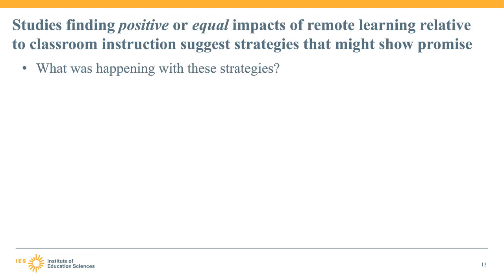Let's pivot from studies with negative impacts and look at promising strategies from studies with positive or equal findings. Across the studies we examined, many involved web-based applications; one involved using phones; some looked at technological devices without internet access. None examined the model where schools send home packets of work. Many of these studies occurred within the walls of the classroom — we were generous in our definition of remote learning and included strategies that could support remote instruction regardless of where the study was conducted. The headline here should be encouraging, especially given the alternative for students.